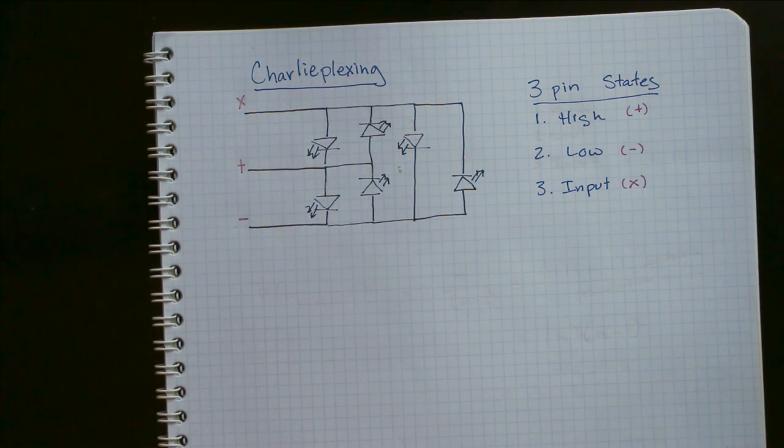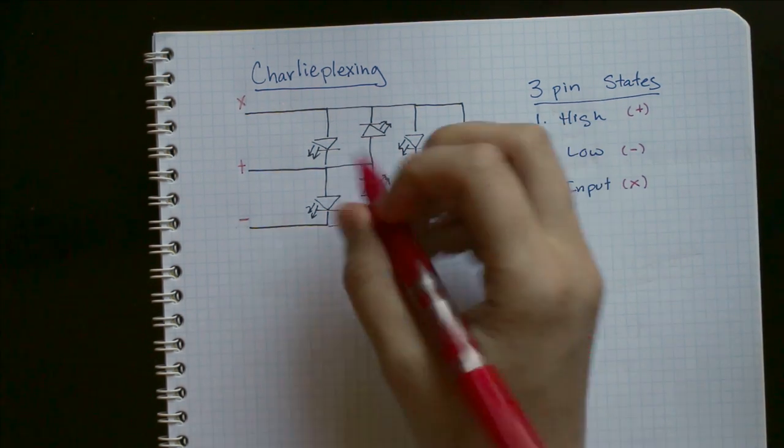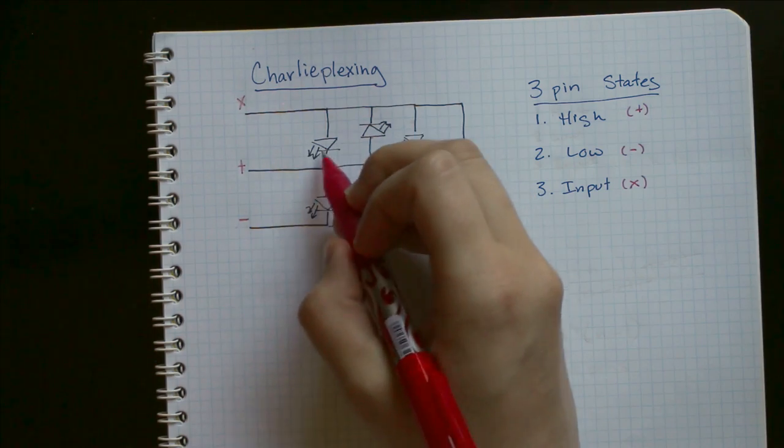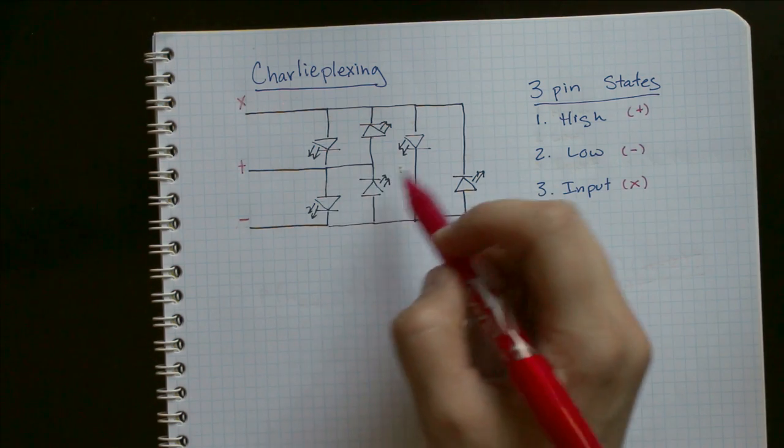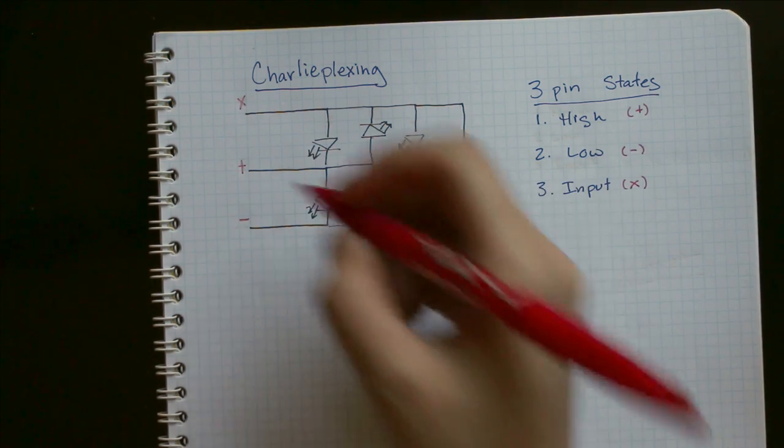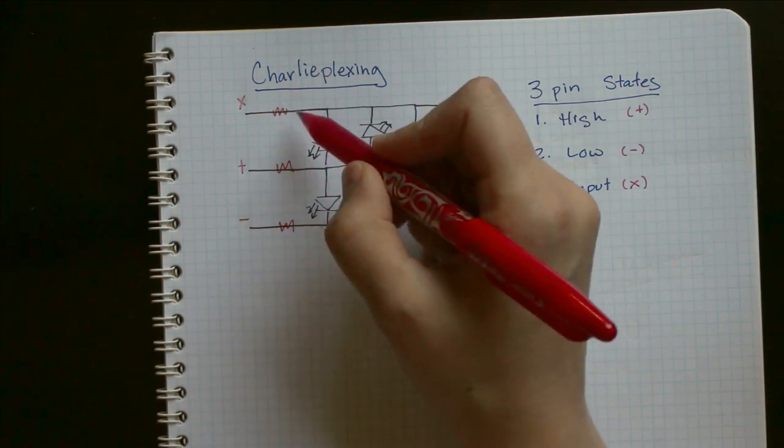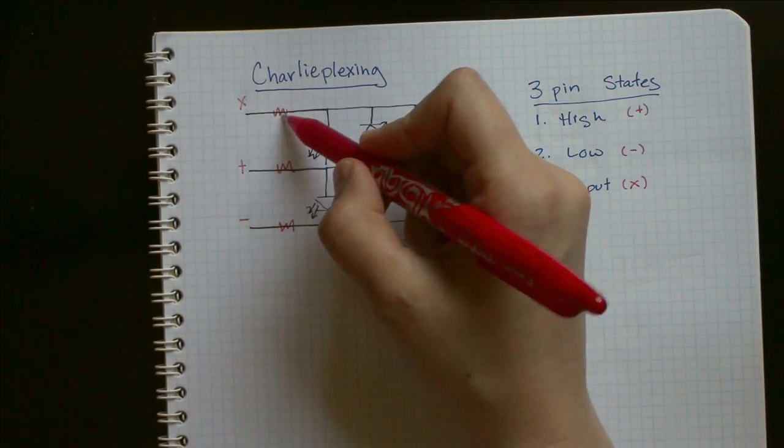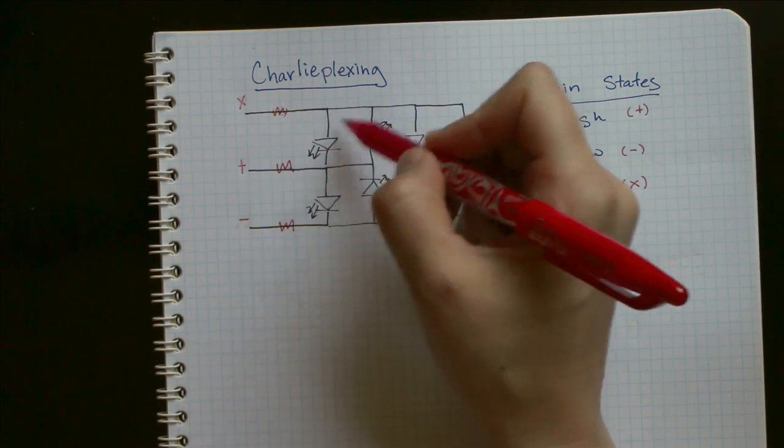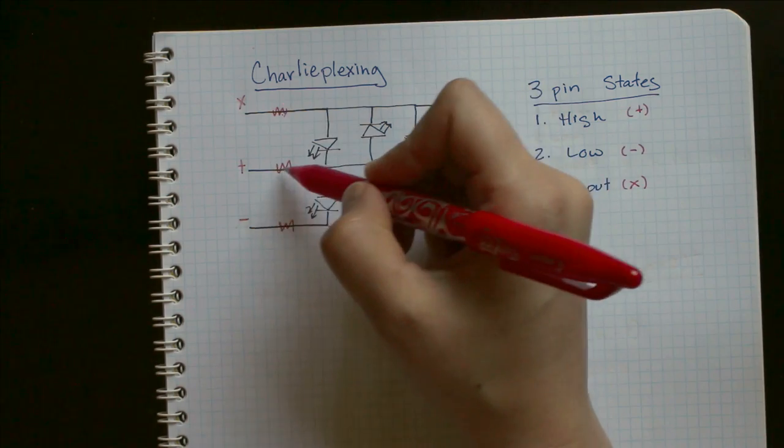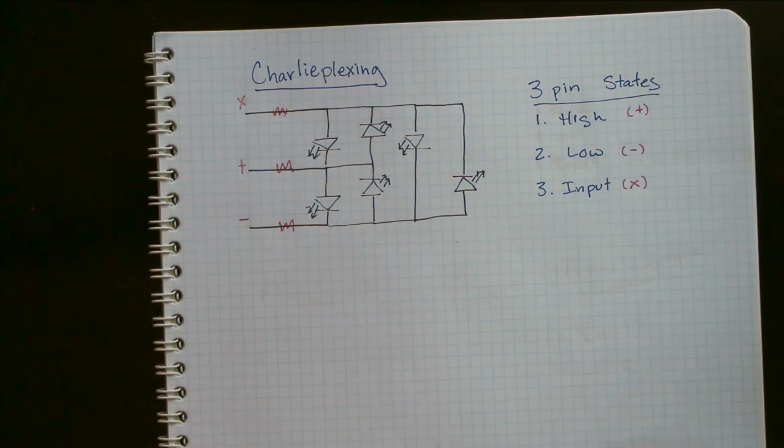So one more thing you need to know when you're setting up these circuits is because these are LEDs, they always need a resistor. And there's two options for where they go. So if the LEDs are all identical, then you put the resistors here, and you make them basically half the resistance. If you're having this LED light on, it'll go through two different resistors as current passes through this LED.